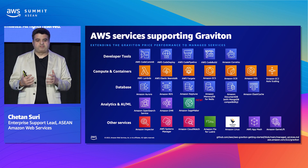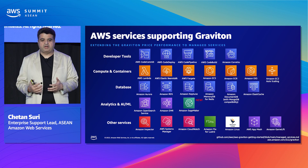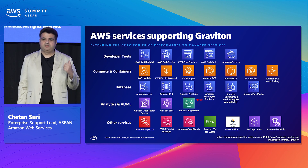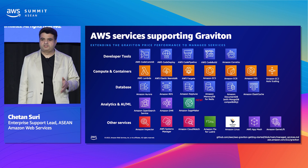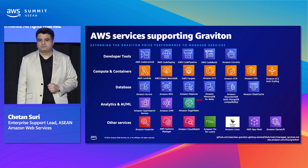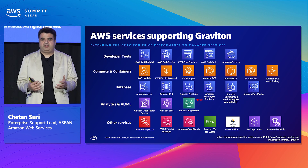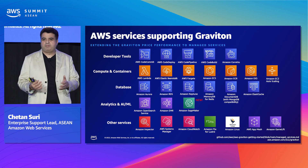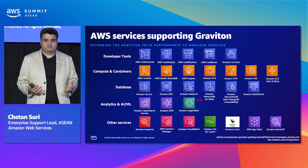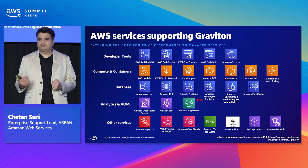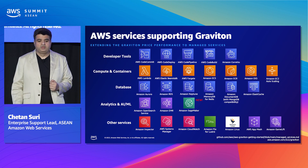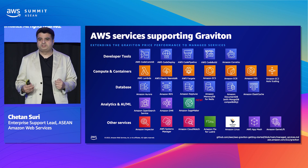We've extended the performance benefits of Graviton 2 to managed services as well. For example, Amazon RDS — with engines such as PostgreSQL, MySQL, and MariaDB — can provide a fully managed database service using Graviton-based instances. With Lambda, you can get up to 34% price performance improvement by running your Lambda functions on Graviton. Migrating serverless functions can be really easy, especially if you use interpreted runtimes such as Node.js or Python, delivering price performance benefits with little or no code changes.